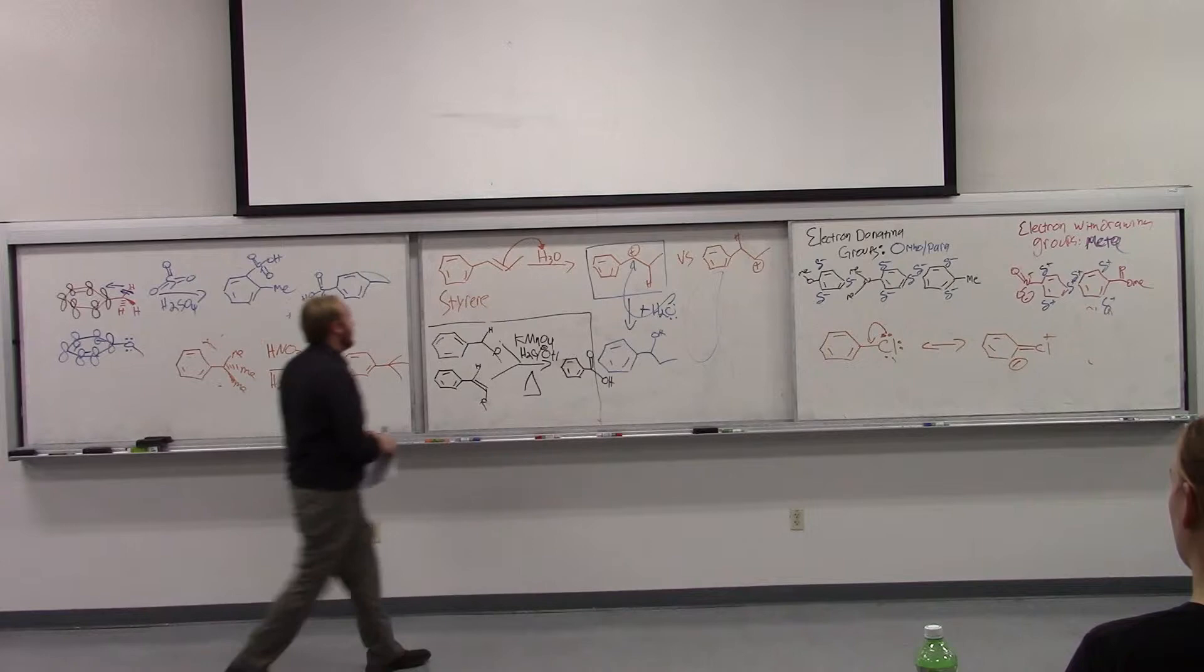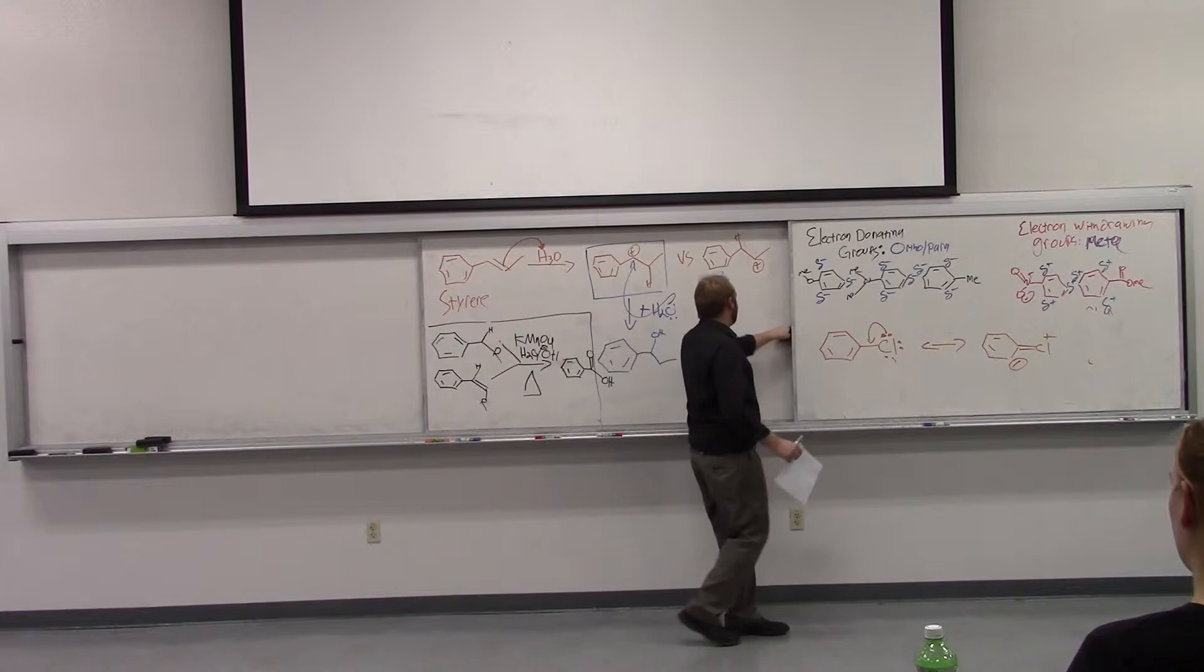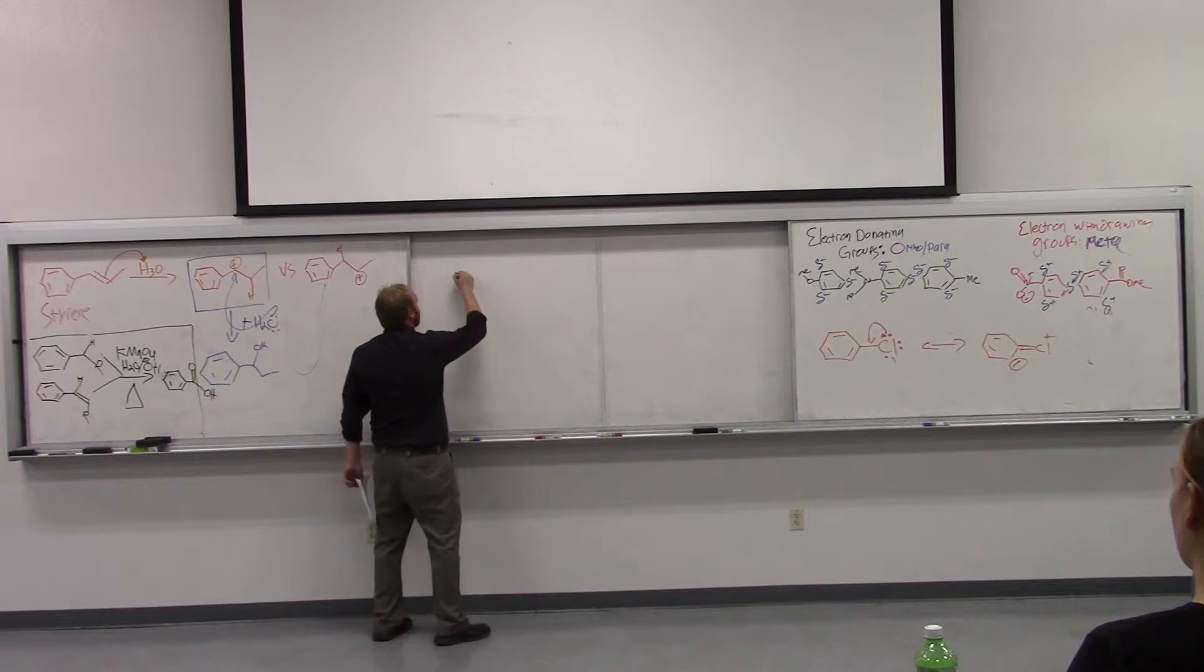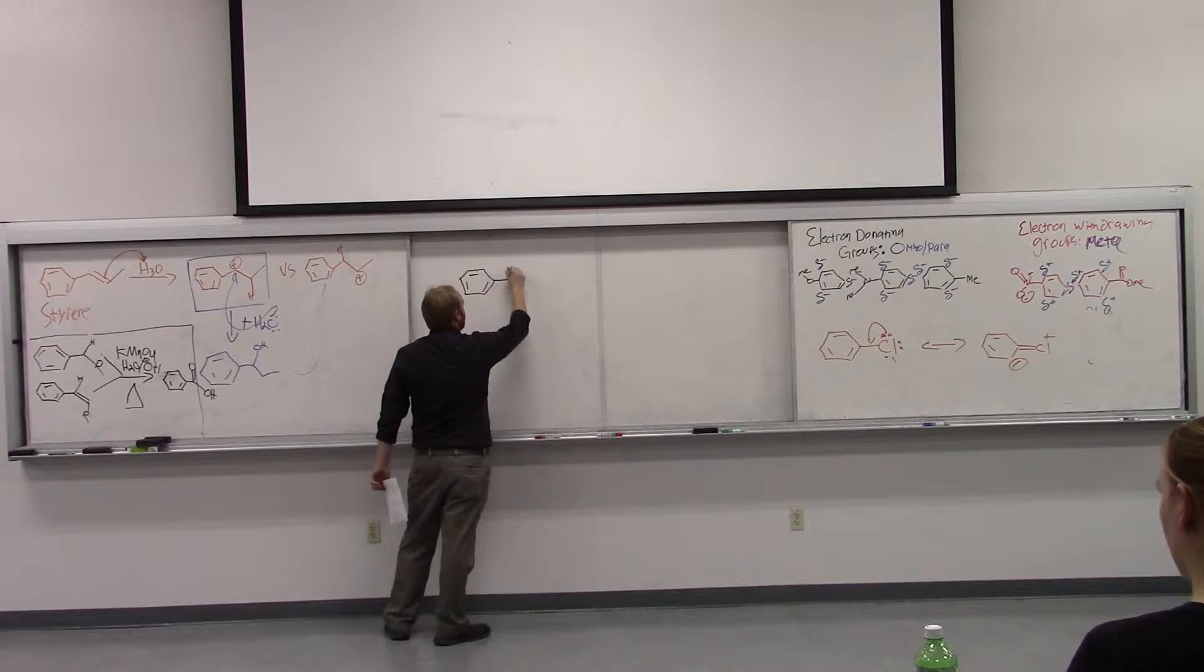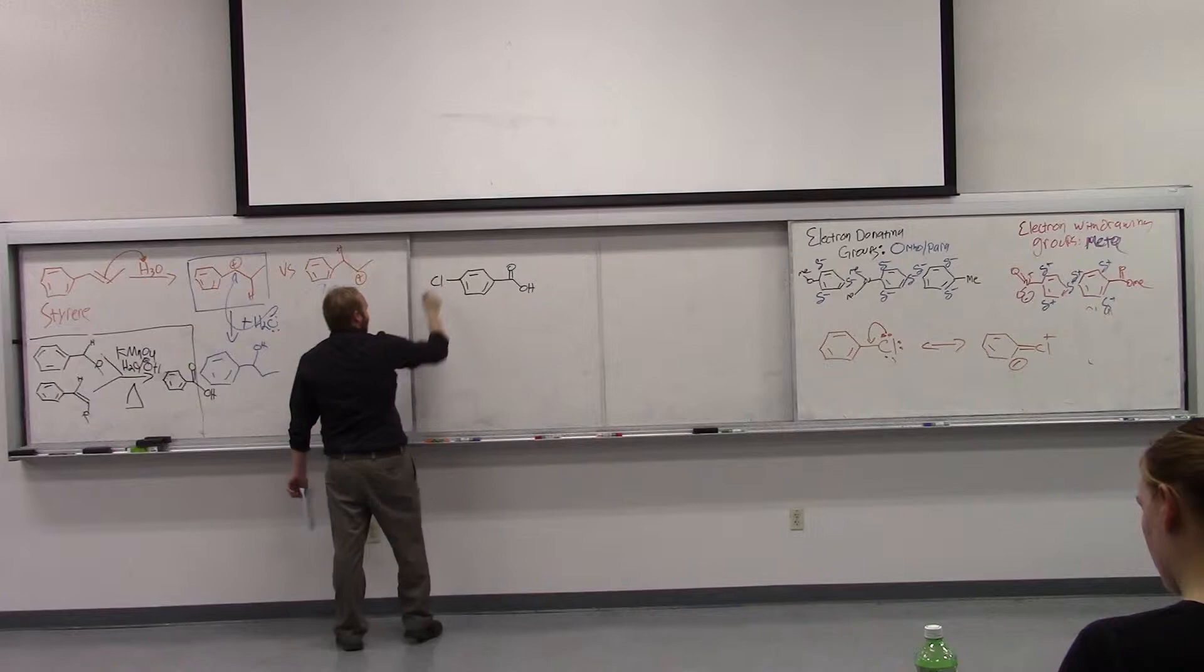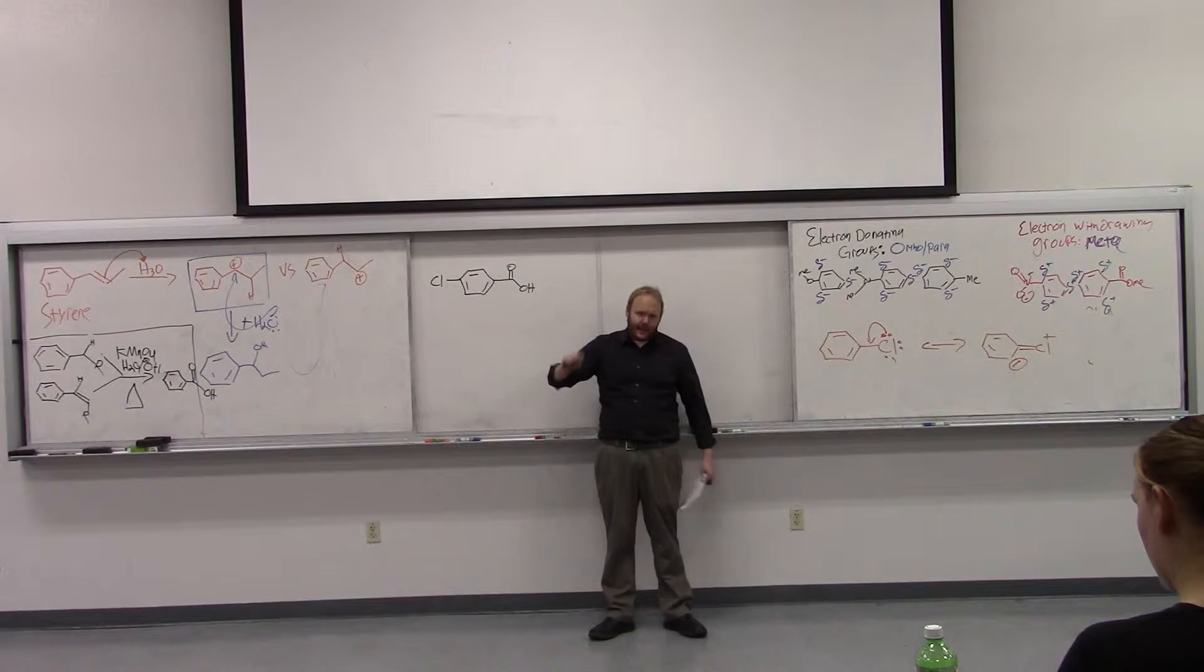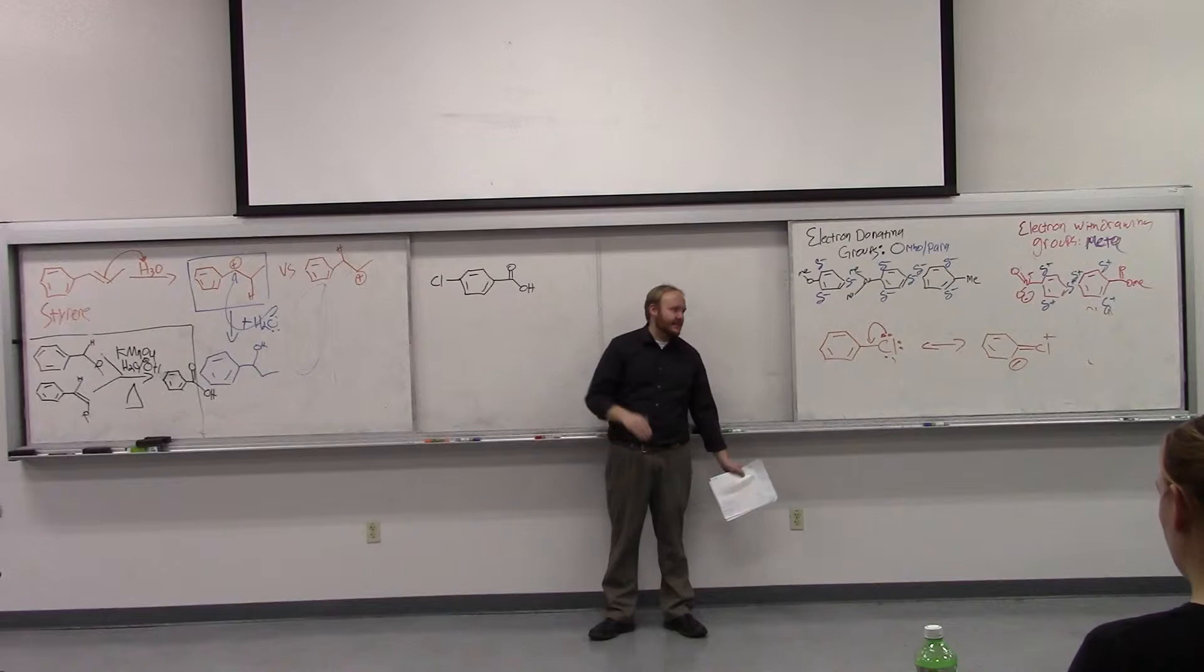But just realize, pretty much anything at this benzylic position, you can turn directly into a benzoic acid derivative just by adding KMnO4 and base under aqueous conditions and heating it. Let me show you an example of why this is actually useful. And this is going to be me getting into synthetic examples for the last 15 or 20 minutes.